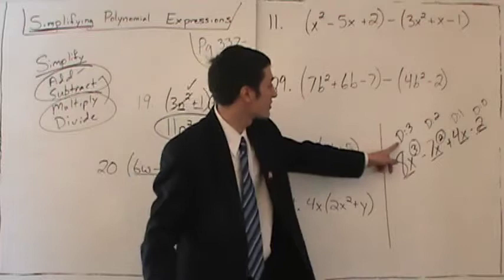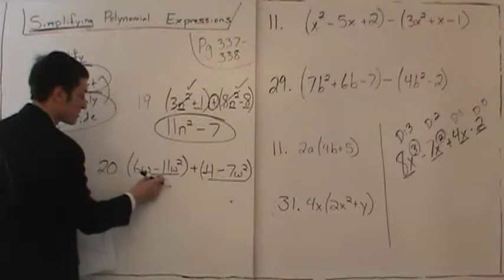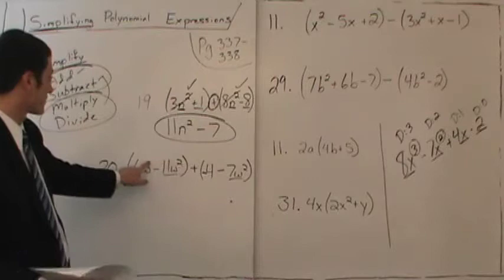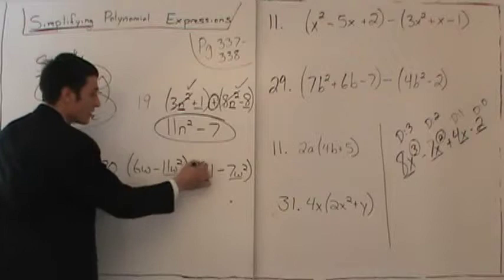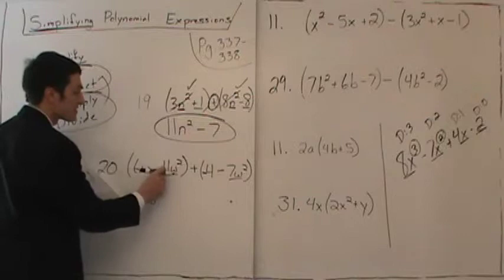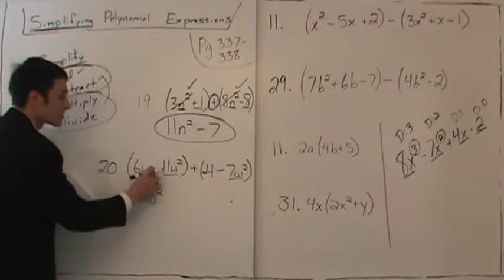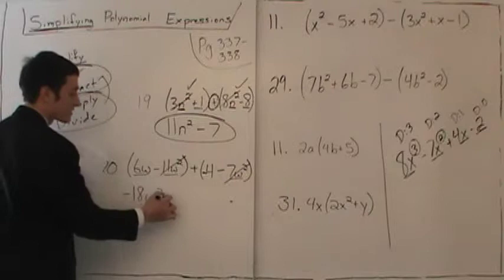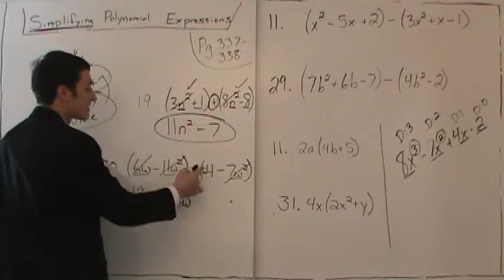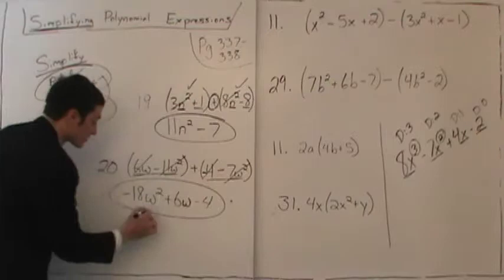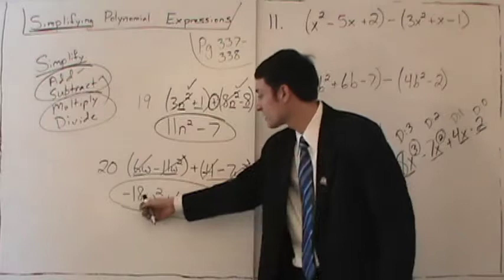When adding, start with your largest degree. Here we have a w squared term (second degree) and another w squared term. What matches doesn't change — write w squared and add what's in front: negative 11 plus negative 7. Since the signs are the same, add: 11 plus 7 is 18, both negative gives negative 18w squared. The w term has nothing matching it, so bring down plus 6w. And bring down minus 4. A binomial added to a binomial gave us a trinomial.